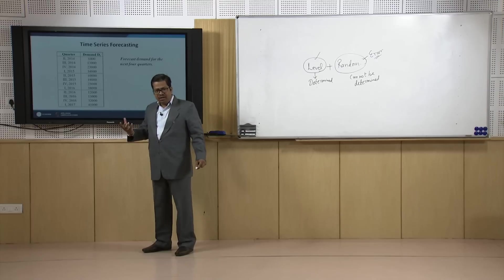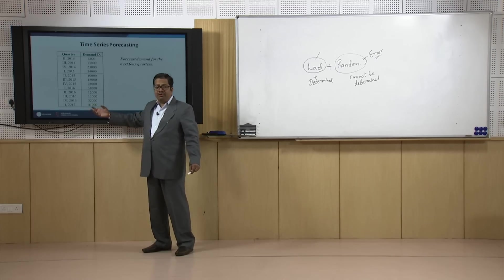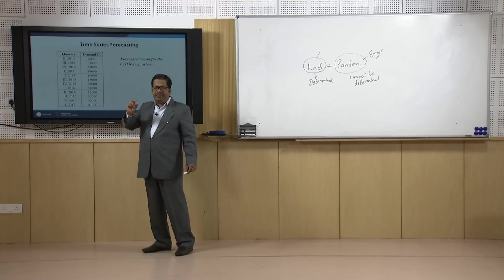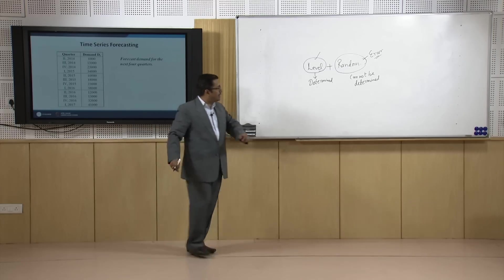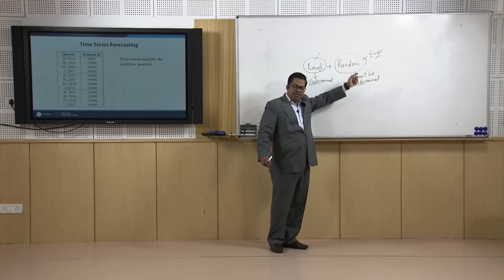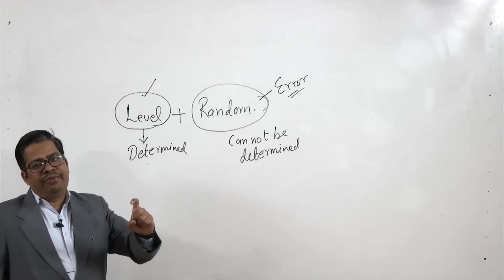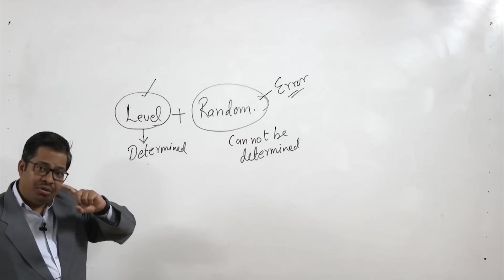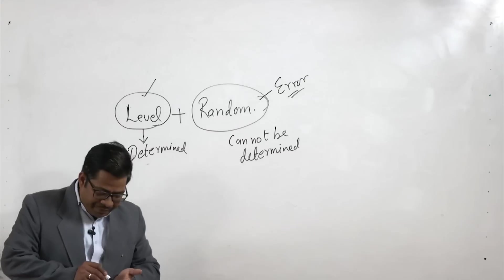If the forecast is 42,000 but the actual demand turns out to be 42,500, then this difference of 500 between the forecasted value and the actual demand is attributed to the random component. We will not be able to actually forecast what the exact actual demand will be — that is a limitation of forecasting.